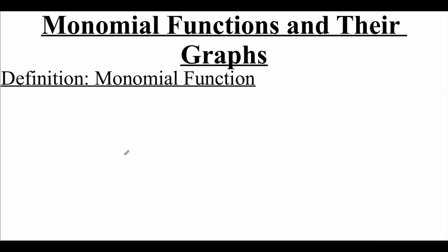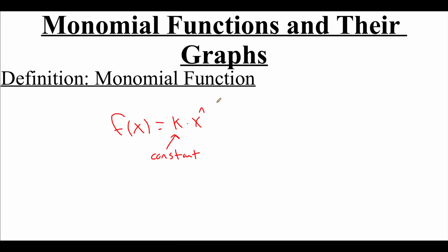A monomial function is a function that has only one term in it, and a monomial function can be written in the form f of x equals k times x to the nth power. Here k represents some constant value and our n power needs to be a positive integer value.